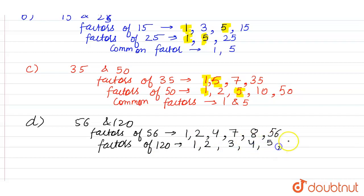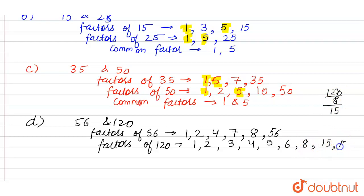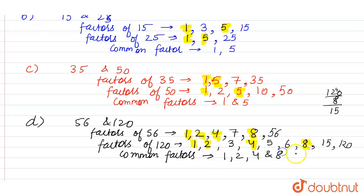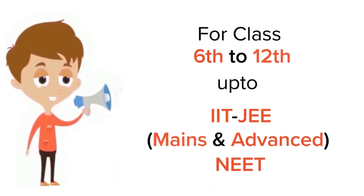Factors of 120: 1, 2 × 60, 3 × 40, 4 × 30, 5, 6 × 20. Not divisible by 7. Then 8 × 15 = 120, then 15 × 8 — it starts to repeat, so 120 is the last factor. Common factors of 56 and 120: checking, we get 1, 2, 4, and 8. So the common factors of 56 and 120 are 1, 2, 4, and 8.